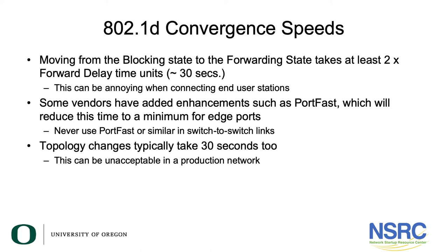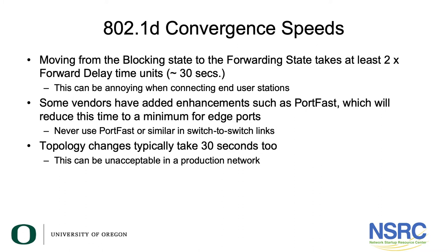802.1d has a problem with convergence speeds. Moving from a blocking state to a forwarding state requires certain timers to expire, which can take 30 seconds. This can be very annoying when connecting end stations — you plug something into a port and have to wait 30 seconds before it can even start doing DHCP. Some vendors have added an enhancement called portfast to reduce this time for edge ports, but you should never use this feature on switch-to-switch links, as you can quickly create a loop before spanning tree notices.